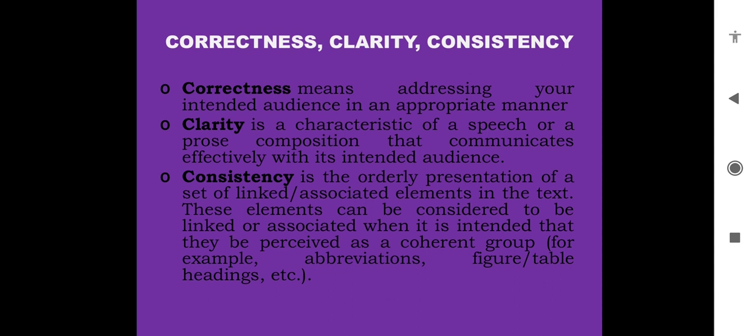Clarity means making content easy to understand by the intended audience. If we produce sharp, clear, intelligent, and easy to understand content, it would become much easier for people to see the value in it. Consistency is the orderly presentation of a set of linked associated elements in the text. These elements can be considered to be linked or associated as a coherent group, for example, abbreviations, figures, table headings, etc.